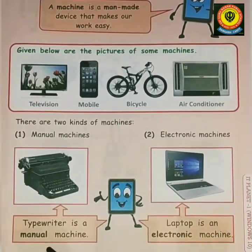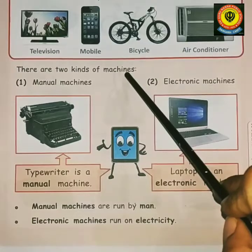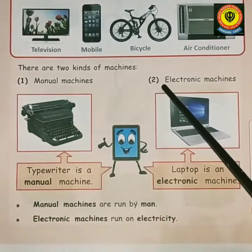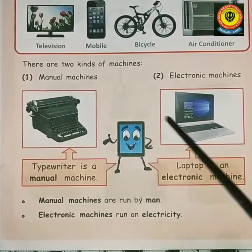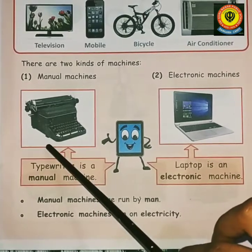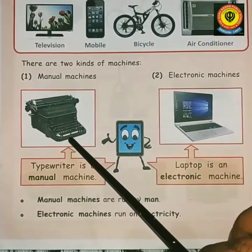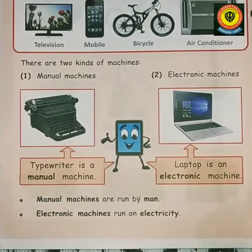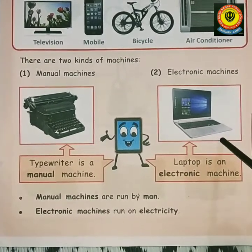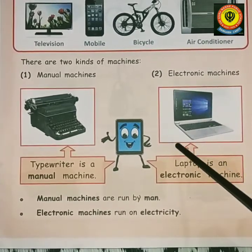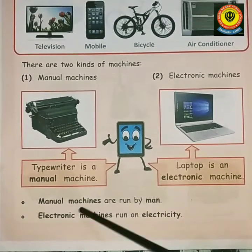Machines are of two kinds: first is manual machine, second is electronic machine. A typewriter is a manual machine because it is run by man. A laptop or computer is an electronic machine because it runs on electricity — it needs to be charged, and then only it works.